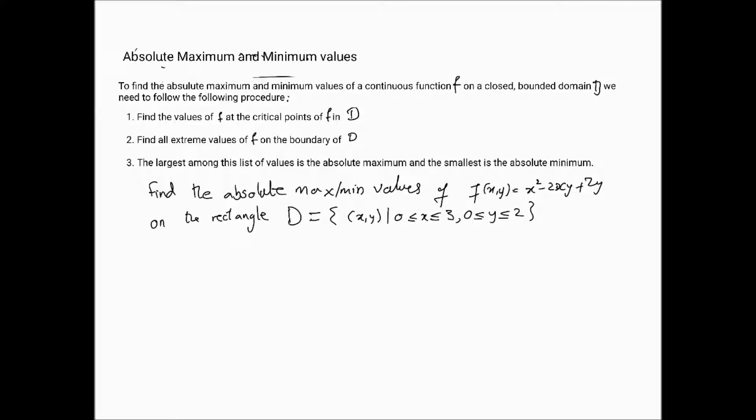Let's look at an example. We want to find the absolute maximum and minimum values of f(x,y) = x² − 2xy + 2y on the rectangle D, defined as x between 0 and 3, and y between 0 and 2. The first thing we'll do is have a look at what D actually looks like.